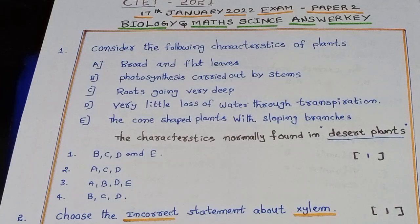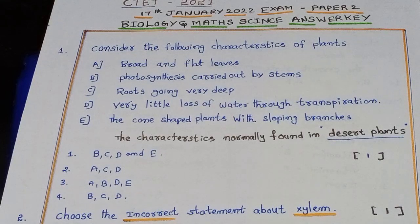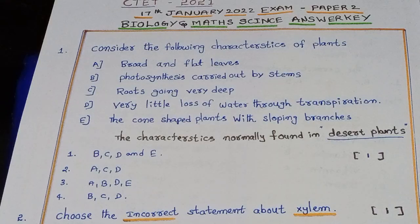Desert plants do not have broad and flat leaves, so option A is incorrect. All other options — B, C, D, and E — are correct characteristics of desert plants.